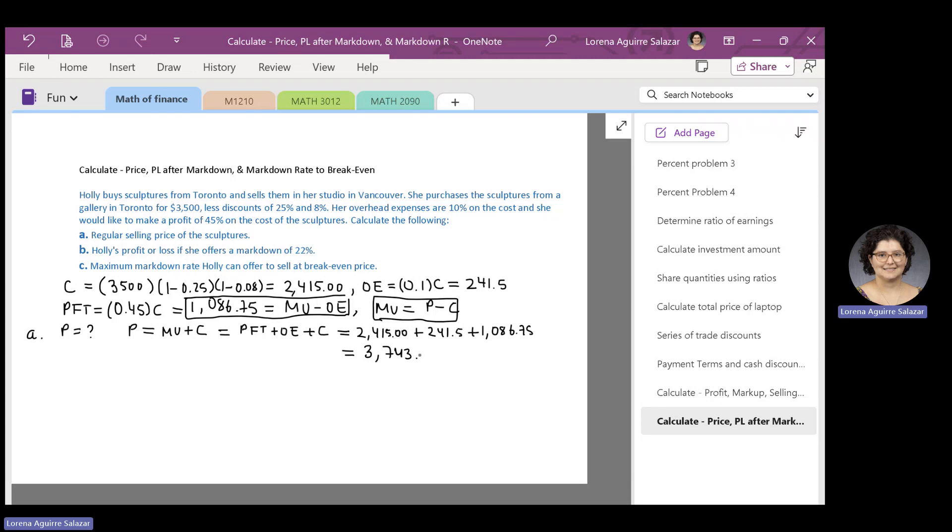We can write profit in terms of markup and overhead expenses. We can write markup in terms of the regular selling price and the cost. Then, we can write the price, the regular selling price of the sculptures in terms of profit, overhead expenses, and the cost of the sculptures. Okay, let's move on to part B.